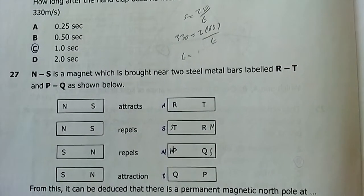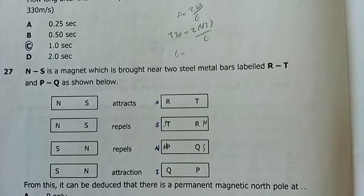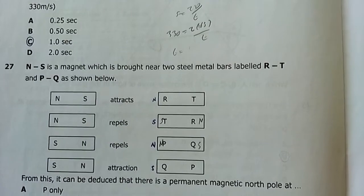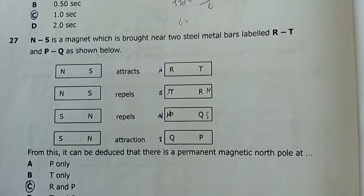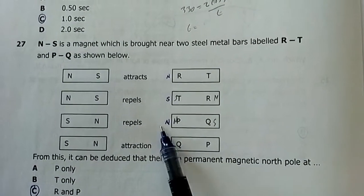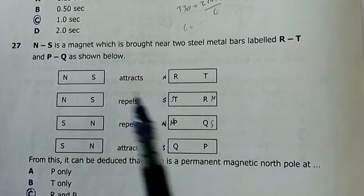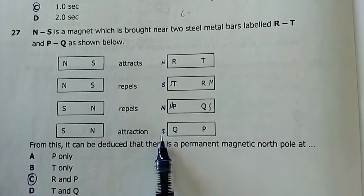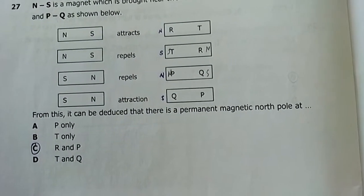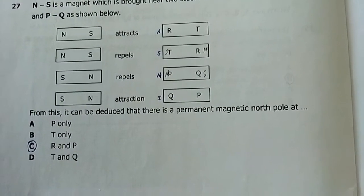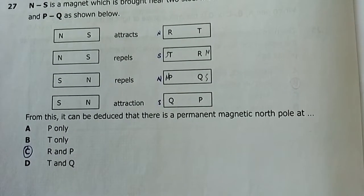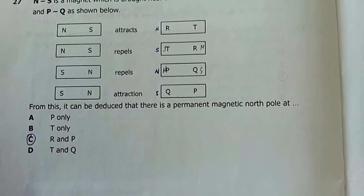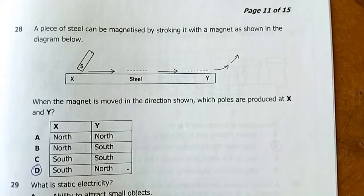Question 27: A north-south magnet is brought near two steel metal bars labeled RT and PQ. The south pole attracts them — it doesn't repel them — so it can be deduced that there is a permanent magnetic north pole at R and P. Answer is C.